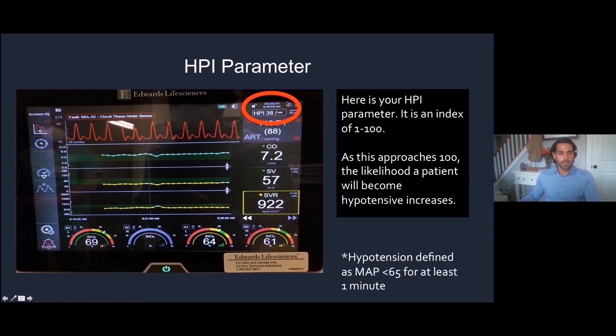So this is our Hemosphere screen. This is the user interface that you're going to see when you hook your arterial line up to the Hemosphere. These numbers here are the hemodynamic numbers that we're familiar with from using other monitoring devices, such as a Swan Ganz.